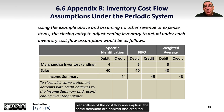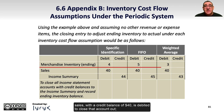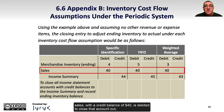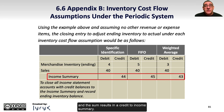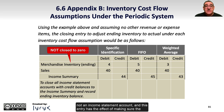Regardless of the cost flow assumption, the same accounts are debited and credited. Specifically, merchandise inventory is debited to record the value of the ending inventory. Sales, with a credit balance of $40, is debited to close that account out, and the sum results in a credit to income summary. Note that the merchandise inventory account is not closed to zero because it's a balance sheet account, not an income statement account, and this entry has the effect of making sure the correct value of the inventory is carried on the balance sheet.